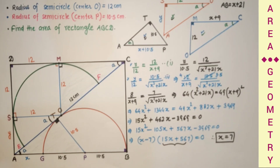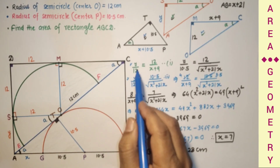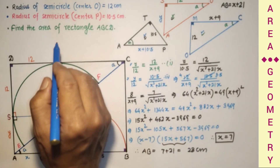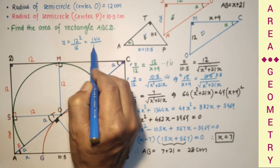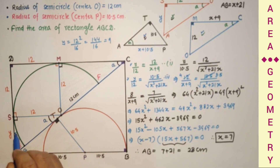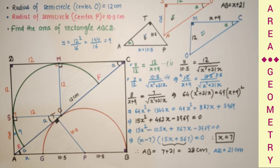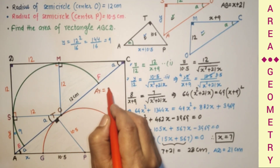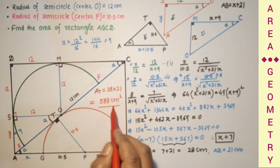With X = 7: AB = 7 + 21 = 28 cm. To get Y: Y over 12 equals 12 over (7 + 9), so Y = 144 over 16 = 9. Therefore AD = 12 + 9 = 21 cm. Area of rectangle ABCD = 28 × 21 = 588 cm².